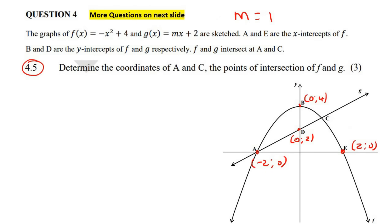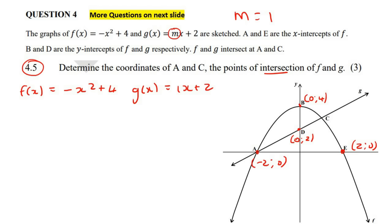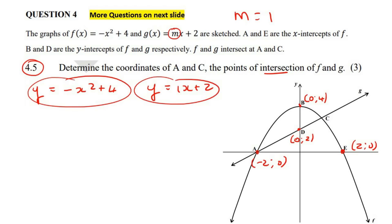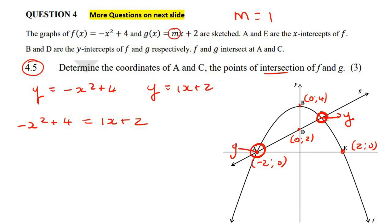This question says determine the coordinates of A and C, the points of intersection of the two graphs. To find where two graphs intersect, you take their two equations. Since both are equal to Y, you make them equal to each other: negative X squared plus four equals X plus two. At the intersection point, the Y values are the same, so we just make them equal and solve.